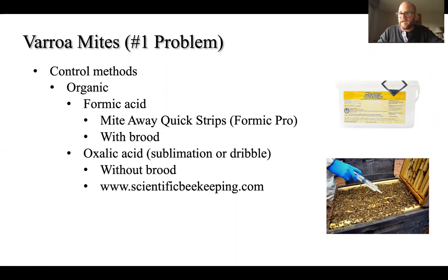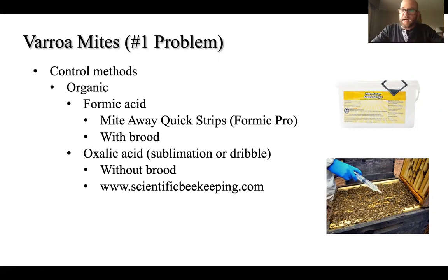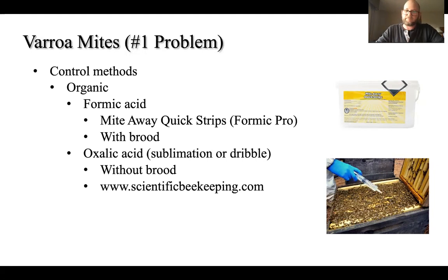You need to be absolutely certain that you read these labels carefully and follow them as directed. Any use outside of that is illegal and could potentially get you in trouble. For oxalic acid, you can use the sublimation method — the vaporizer wand, sold by companies like Dadant and Mann Lake — or the dribble method developed by Randy Oliver of California, who has the full method on his website scientificbeekeeping.com.